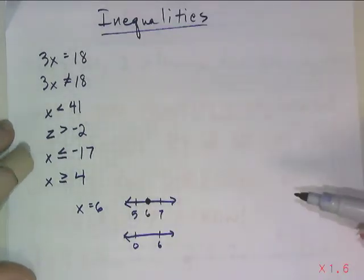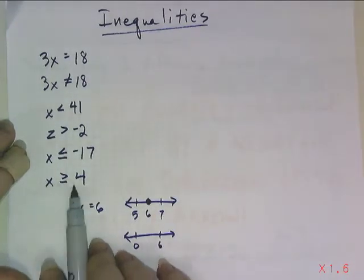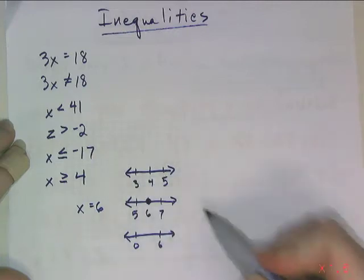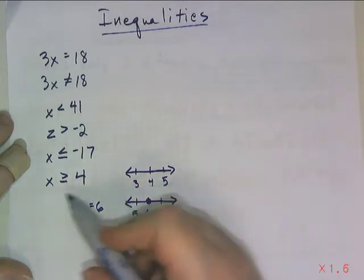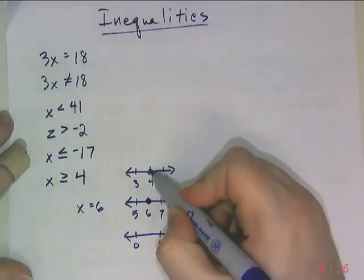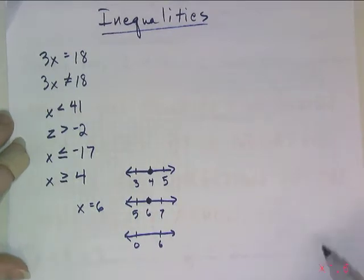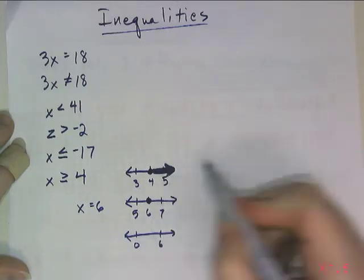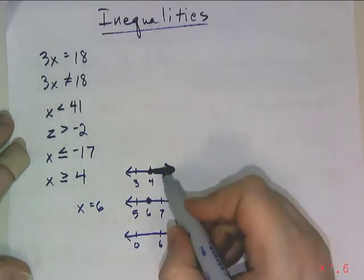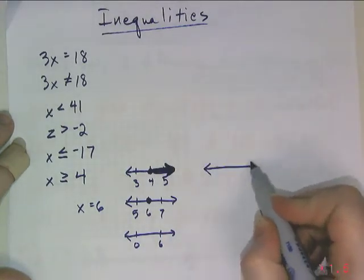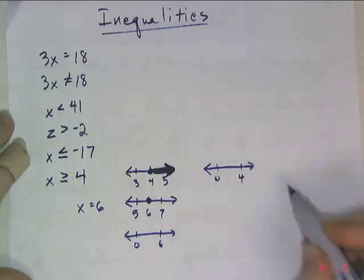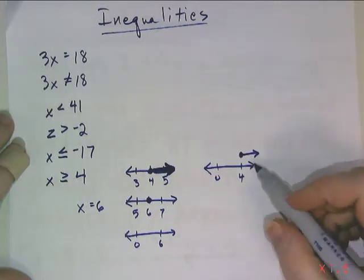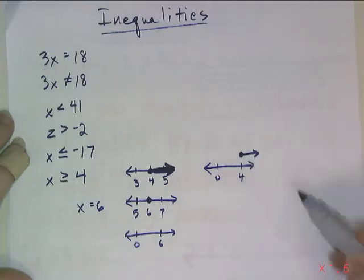We want to be able to graph inequalities as well. When x is greater than or equal to 4, I put a dot on 4 because it could equal 4, but it could also be greater than 4. So I make a big thick arrow to the right. Another option is to draw the dot and arrow above the number line. It's important to do both parts: a dot on the boundary and an arrow showing direction.